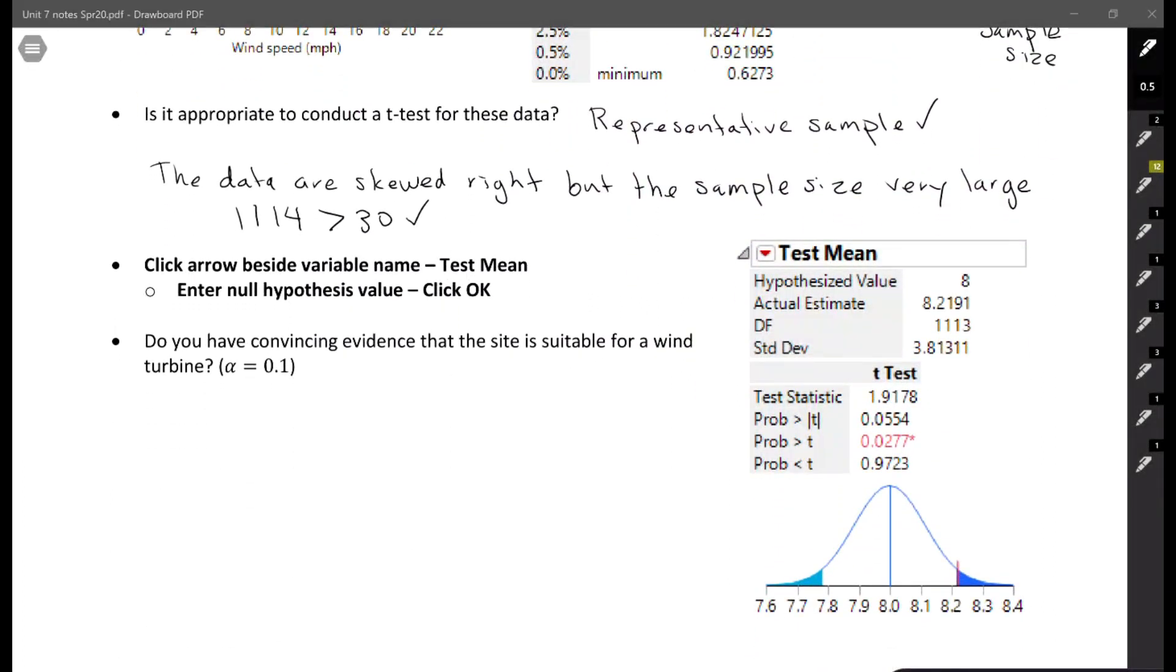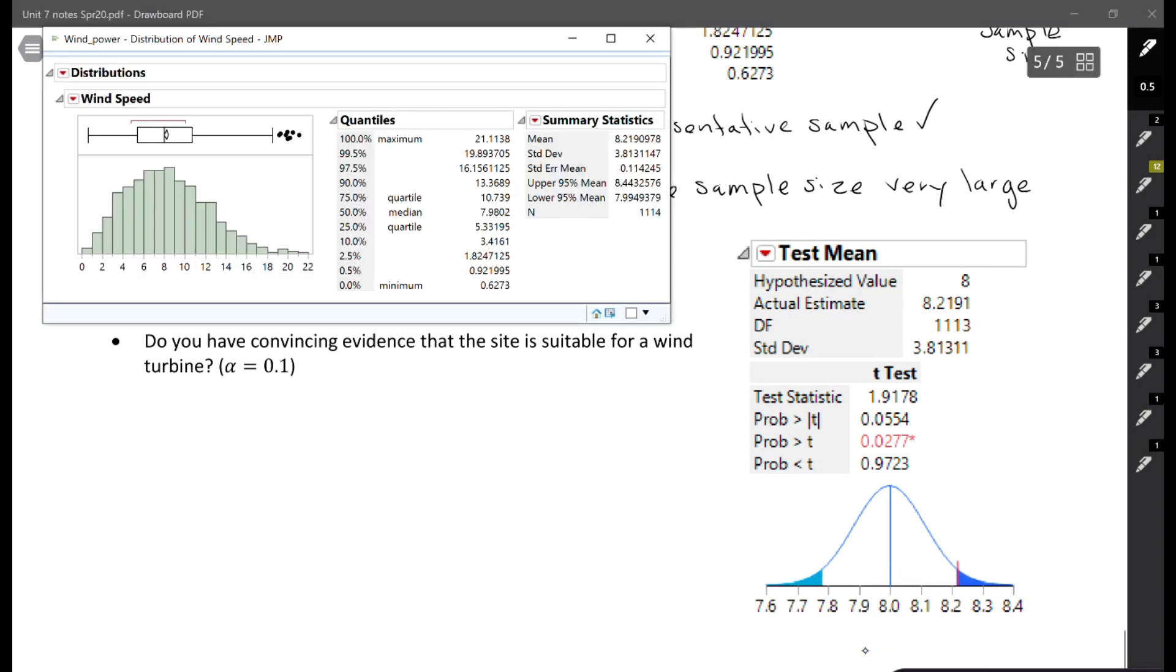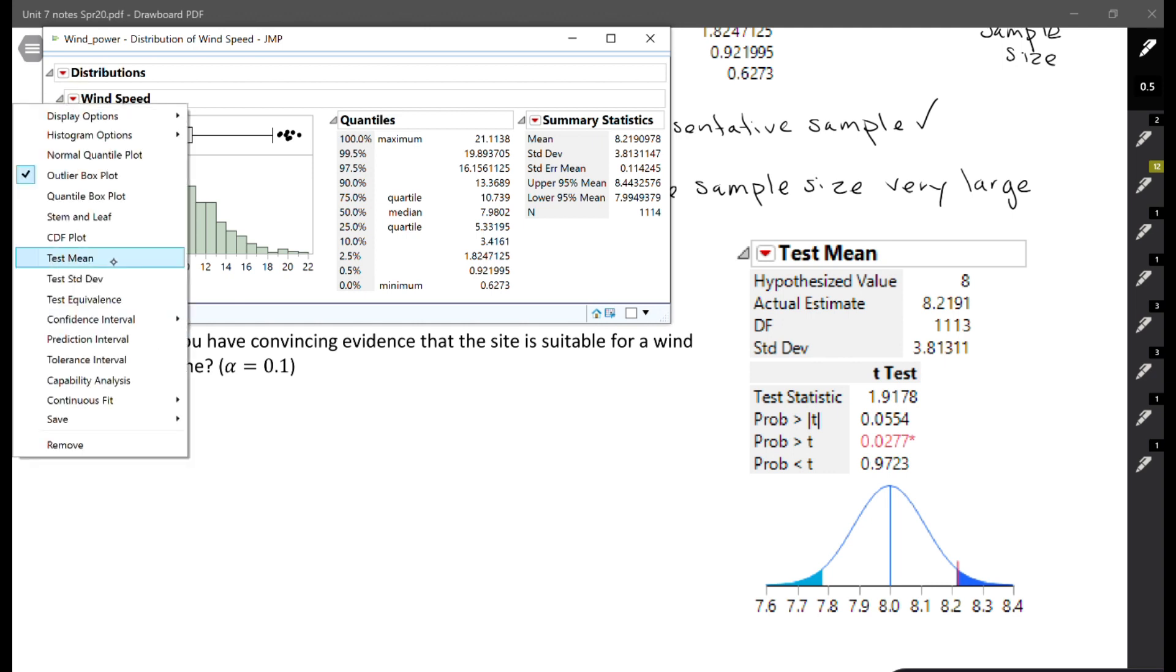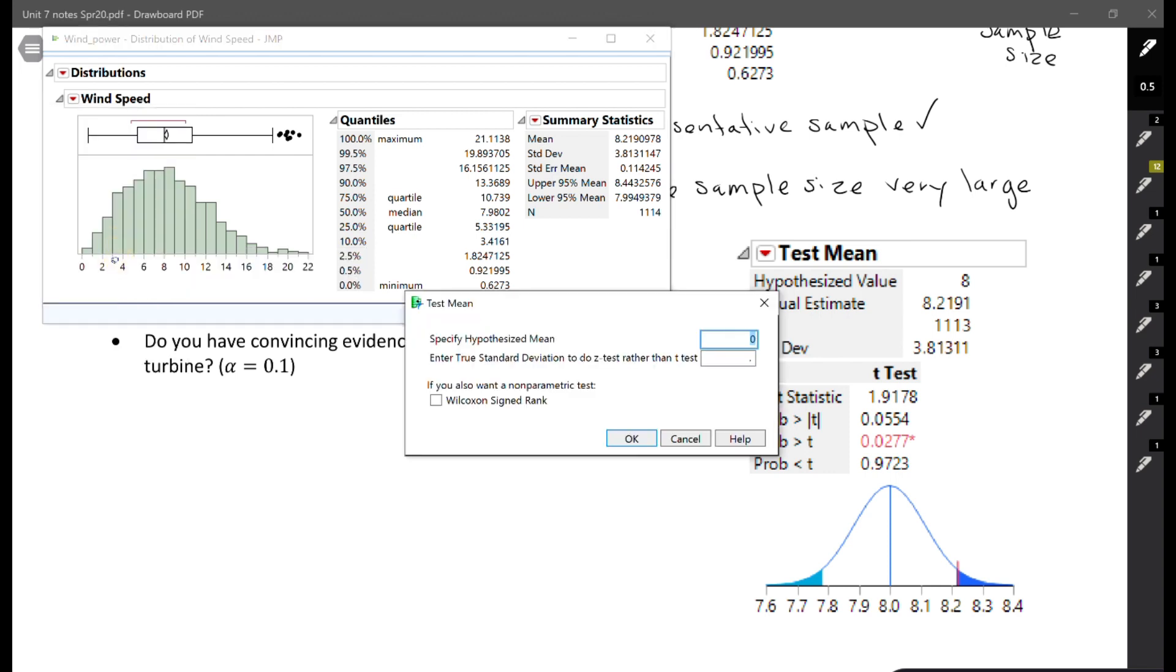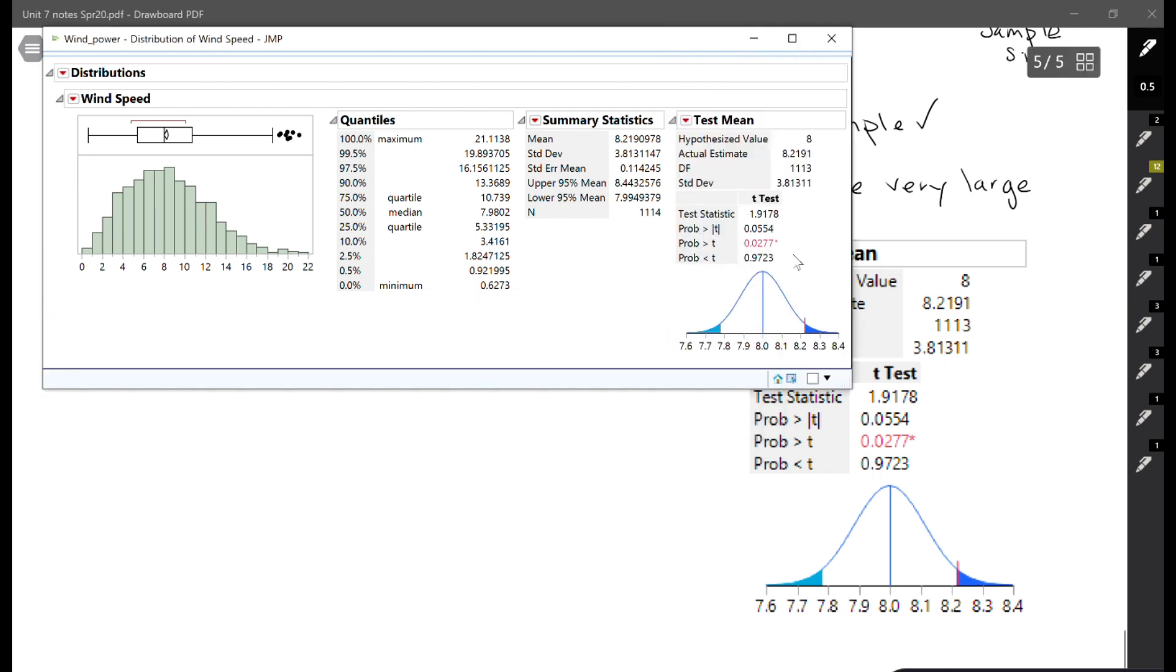To get this next output, I'm going to go back to my analyze distribution and click the arrow next to the variable name and then choose test mean. I'm going to put in whatever my null hypothesis value is here. For this one, I'm going to be testing the null hypothesis is eight, because it says the annual average wind speed needs to be at least eight miles per hour. I'll use that and click OK. Just put the hypothesis value in and that's it.